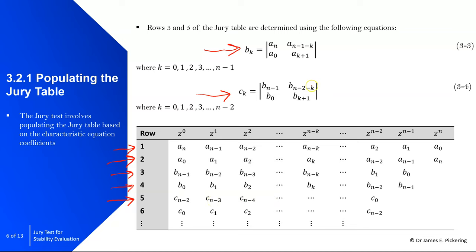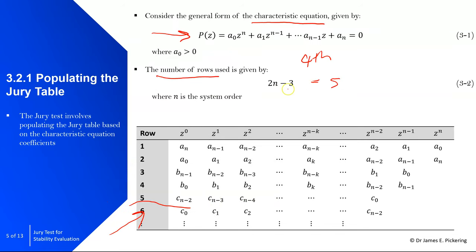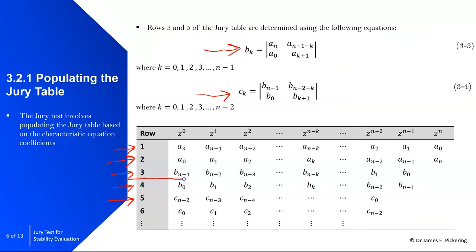If we had a third order system — 2×3−3 = 3 — we'd only use 3 rows and wouldn't need equation 3.4. I'm going to save the detailed explanation of these equations until we get to an example, because the k term can be a bit confusing. Other than the k term, you can see it's just the determinant of a 2×2 matrix from an area within the Jury table, where the k value determines which elements are selected.